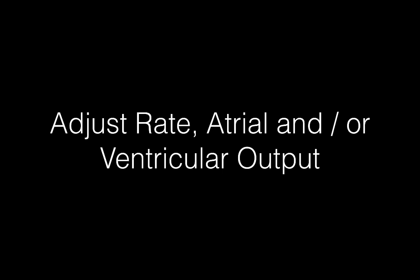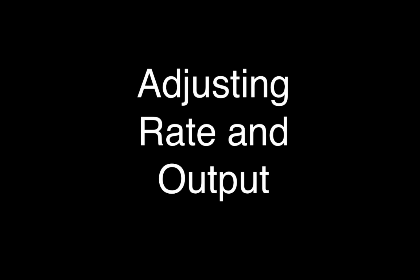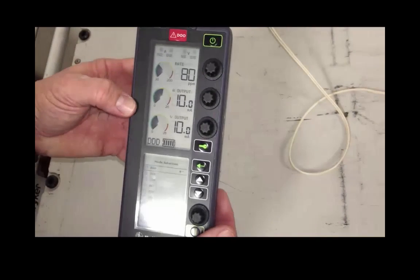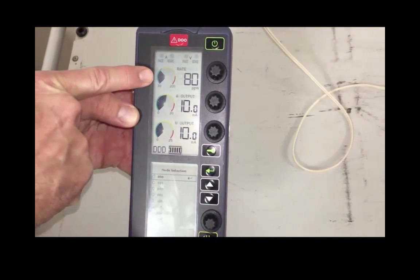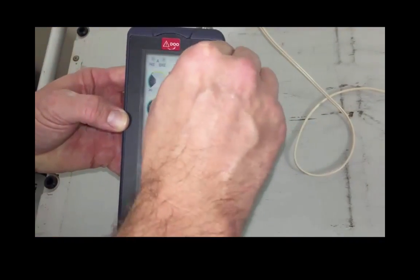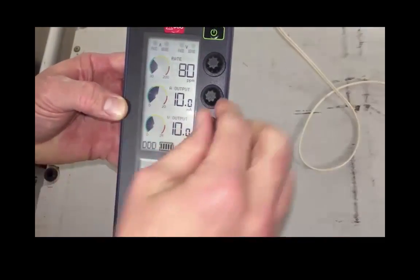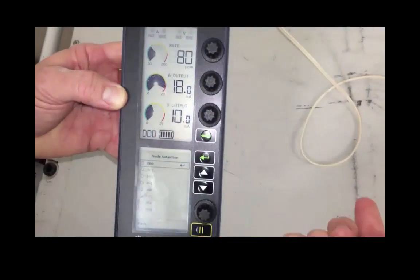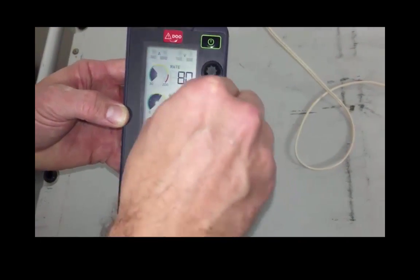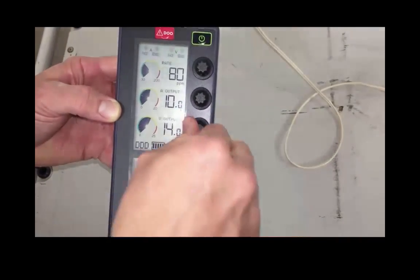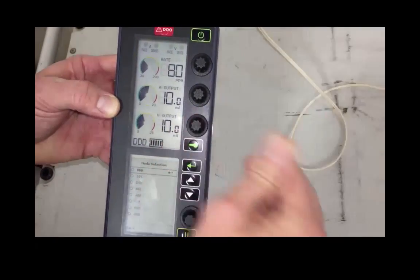So now we're going to talk about adjusting the rate, the atrial, and or the ventricular output. That's going to be using the upper screen menu system. Adjusting rate, atrial, and ventricular output are pretty straightforward. On the upper menu, there is an area for rate, atrial output, and ventricular output with a corresponding dial. Turn the dial clockwise to increase, and turn the dial counterclockwise to decrease. Remember to assess for capture by looking at your monitor screen as well as your patient's clinical response.